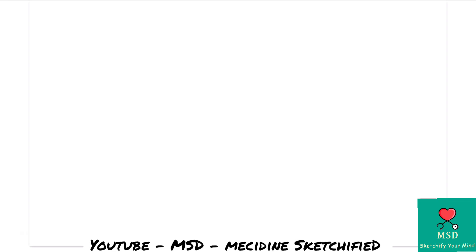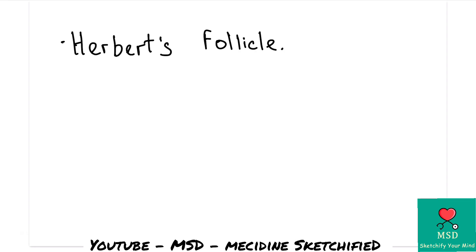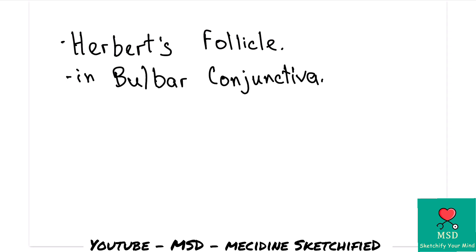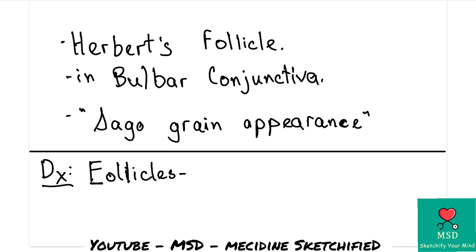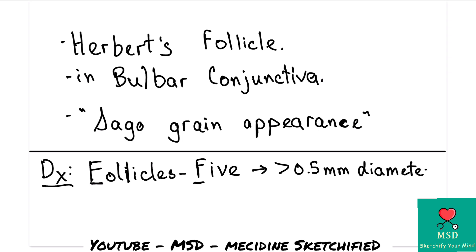These follicles are called Herbert's follicles and are present in the bulbar conjunctiva. Their appearance is called sago grain appearance. For diagnosis of the follicular stage, the follicles must be more than 0.5 mm in diameter and more than five in number.